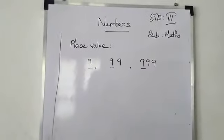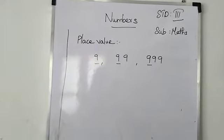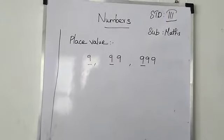First we are going to revise about place value. Here having some numbers: 9, 99, 999.